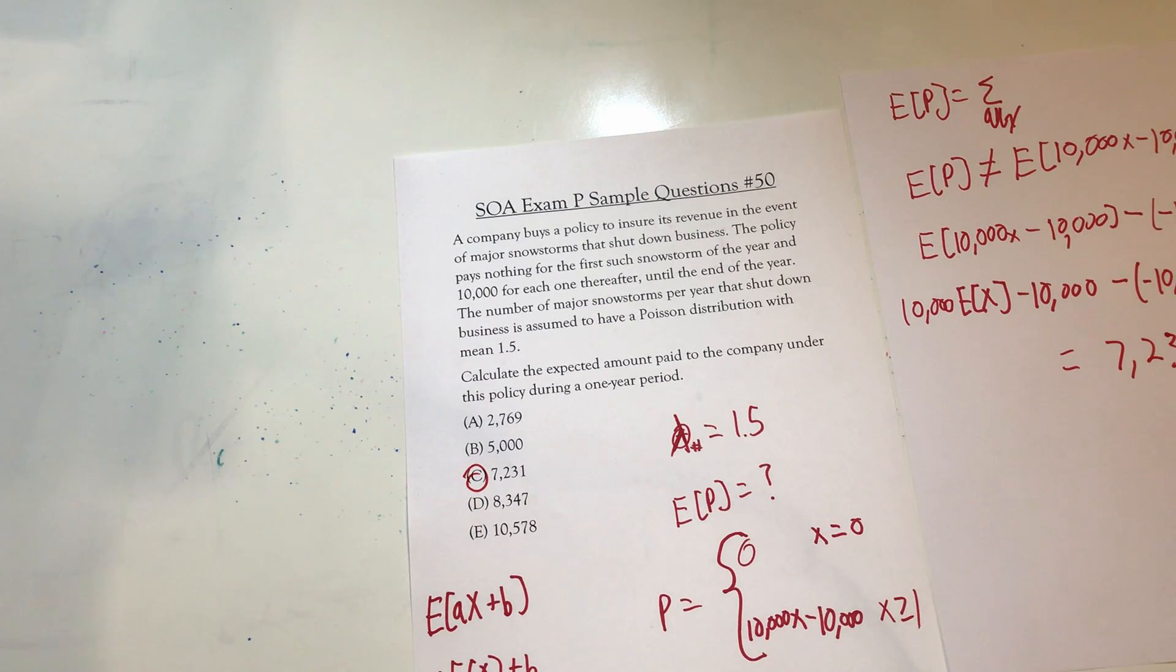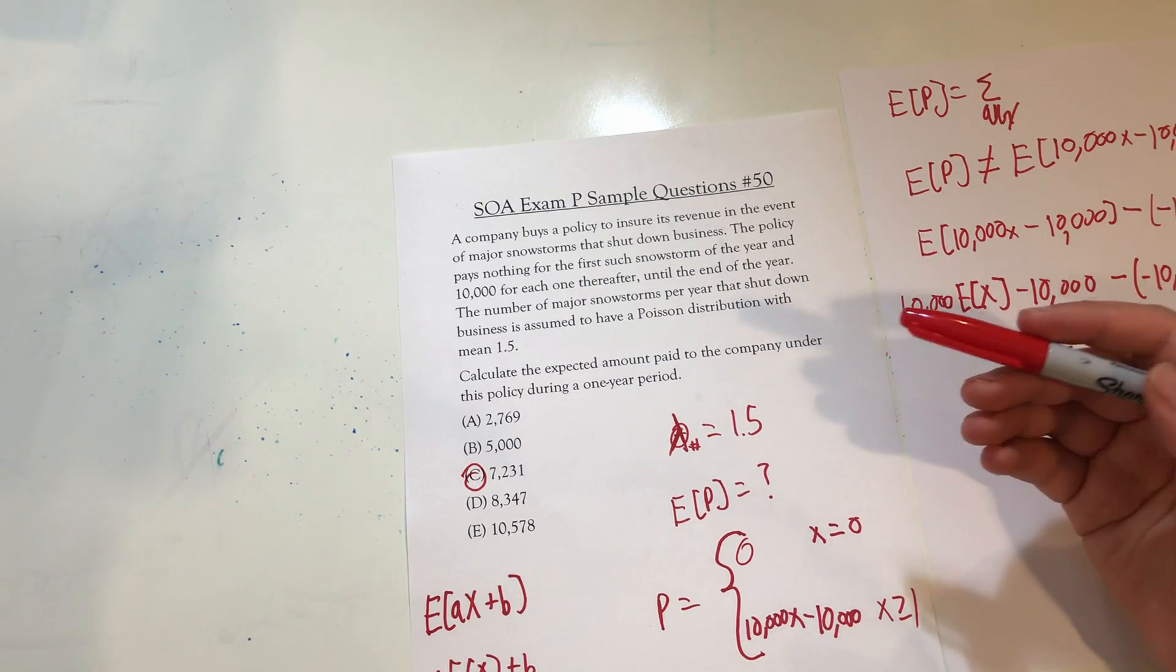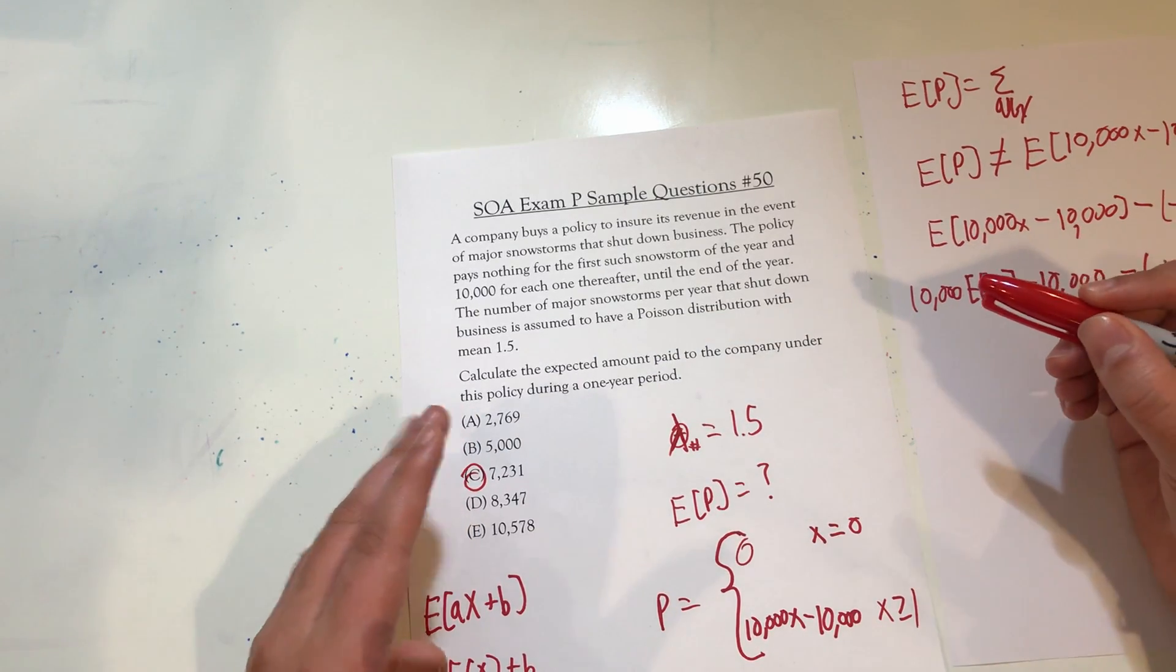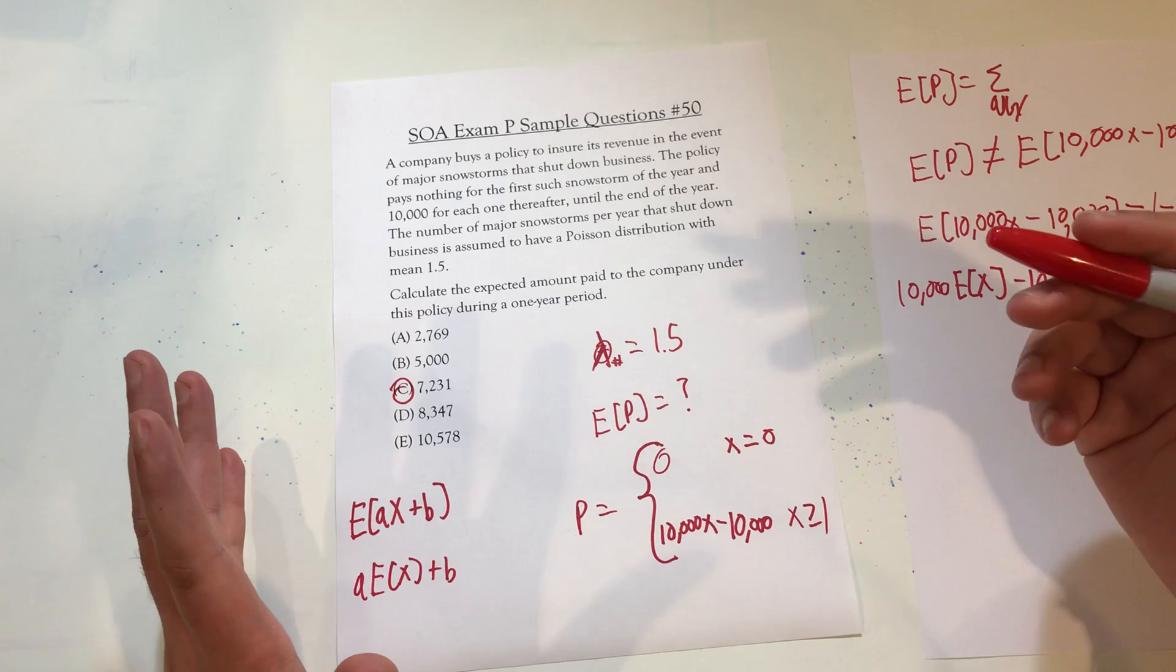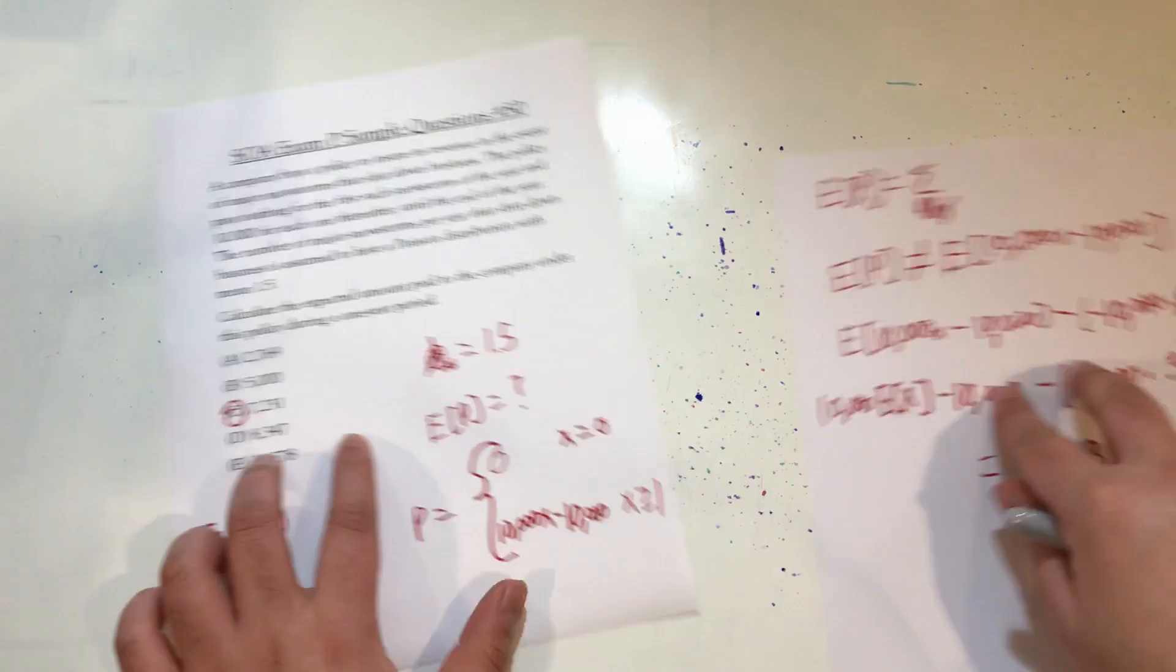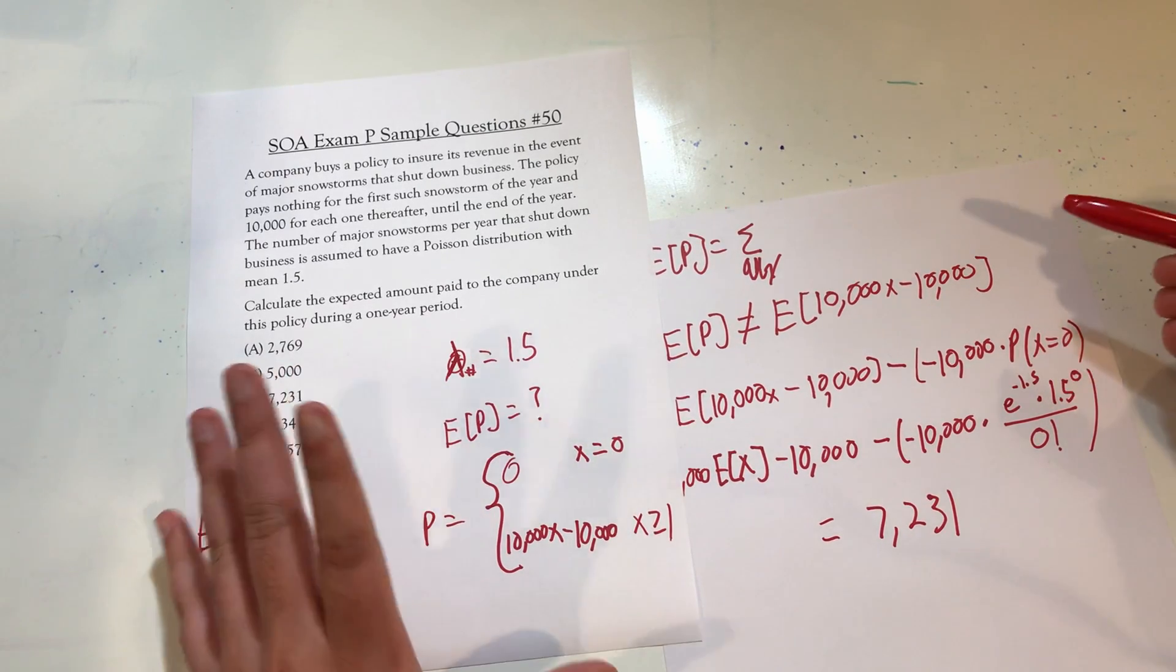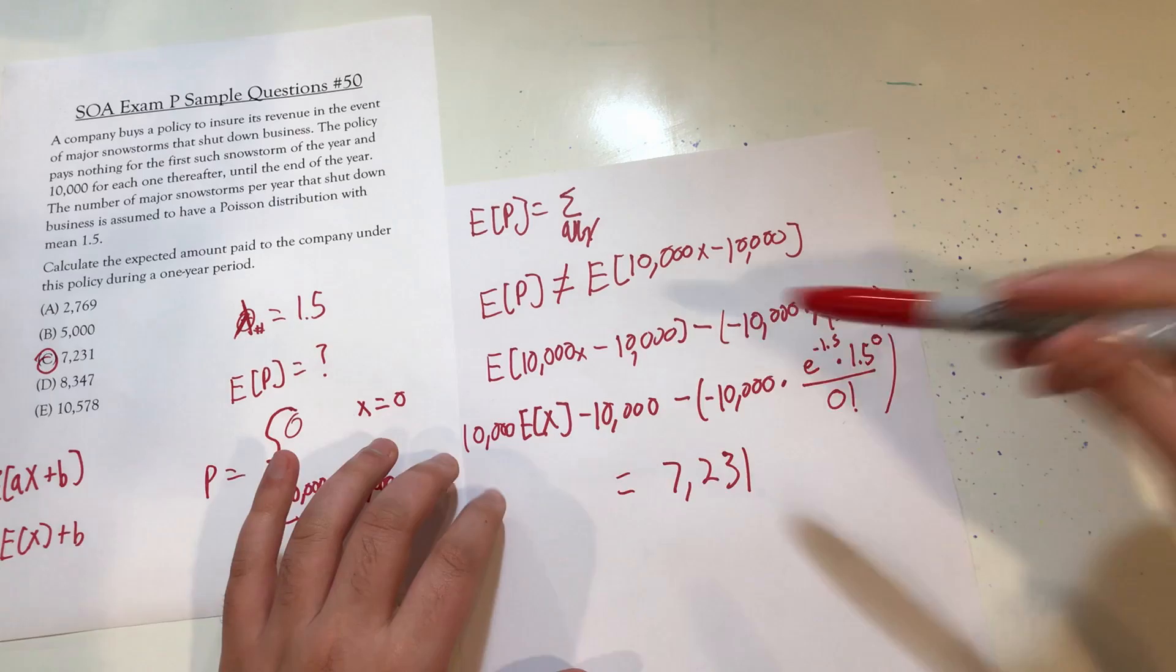It starts off simple and there's just one small tricky thing about it. It asks for the expected amount paid. However, it doesn't give us information about the amount paid. It gives us information about number of snowstorms and then tells us a relationship between the number of snowstorms and the amount that is paid. From there, we can write some sort of rule or function for payment. Then calculating the expected value, calculating this is not necessarily the same as calculating this. We get that rule and we have to take away the extra situation in there that we don't want, which would be this negative 10,000 payment, which is not something that would actually happen.